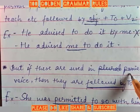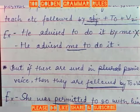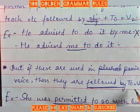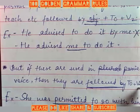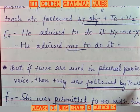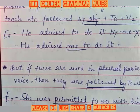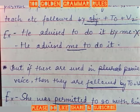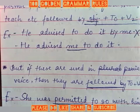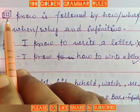But if these verbs are used in passive voice, then they are followed by 'to' and verb — that is, 'to' plus verb first form will be used. Verb ki second form hi aaygi. For example: 'She was permitted to go with him.' Here 'to' and verb first form — 'go with him' — is used. This is the example for this note.